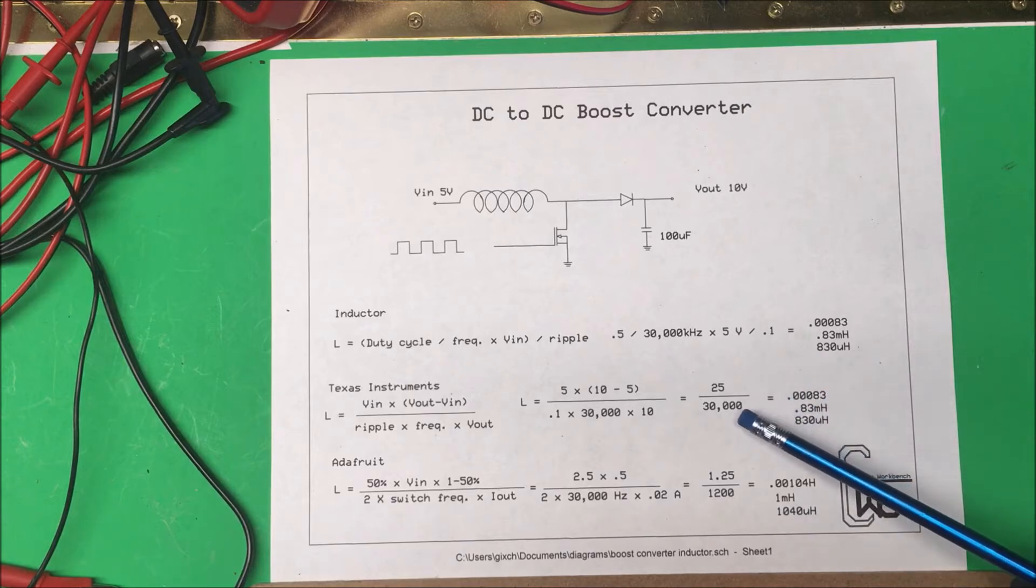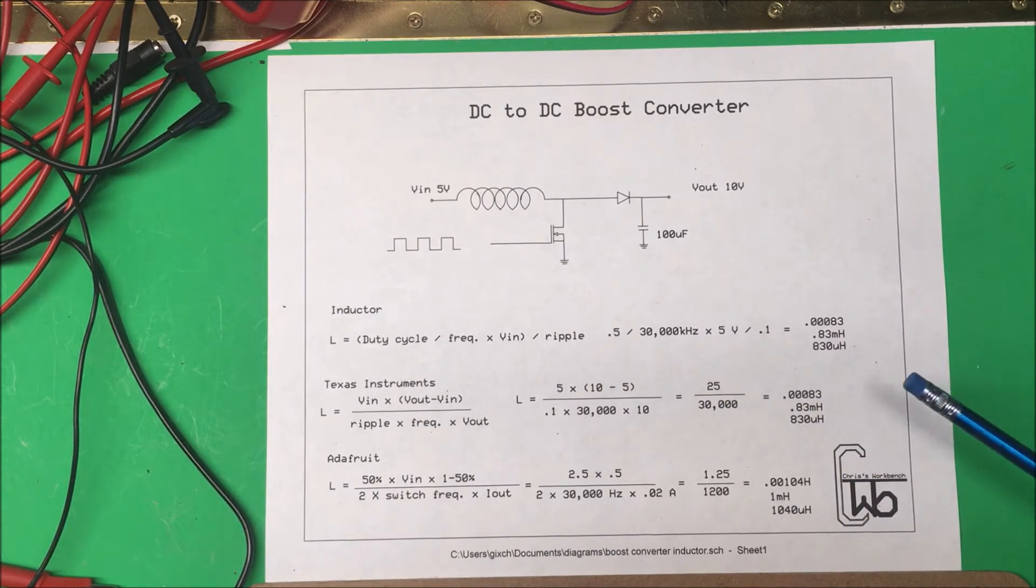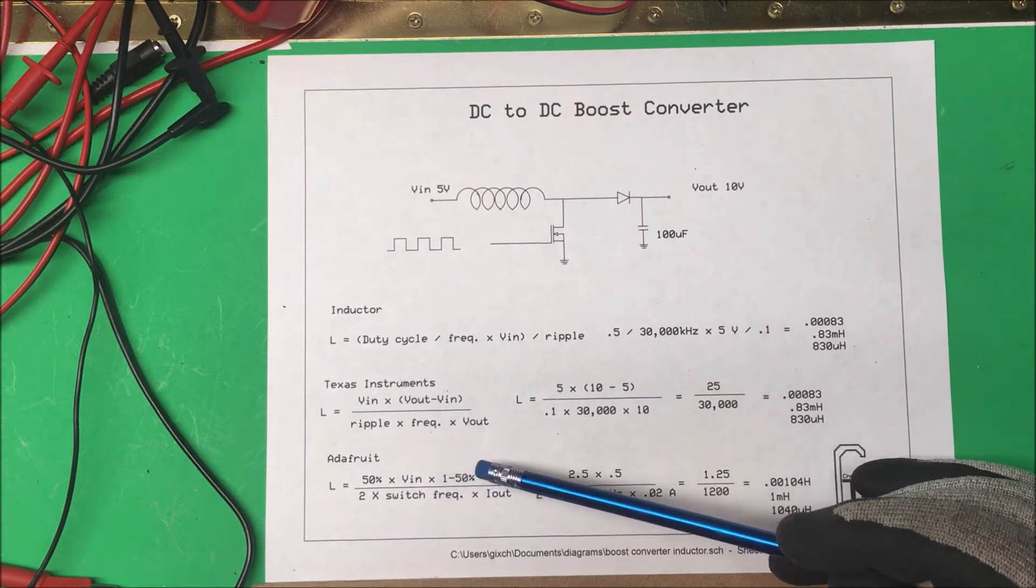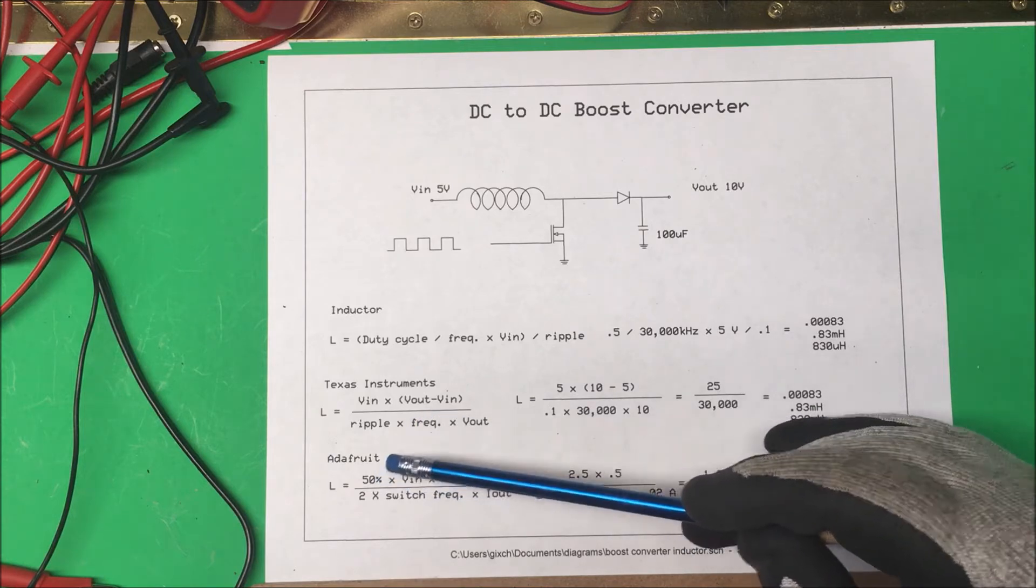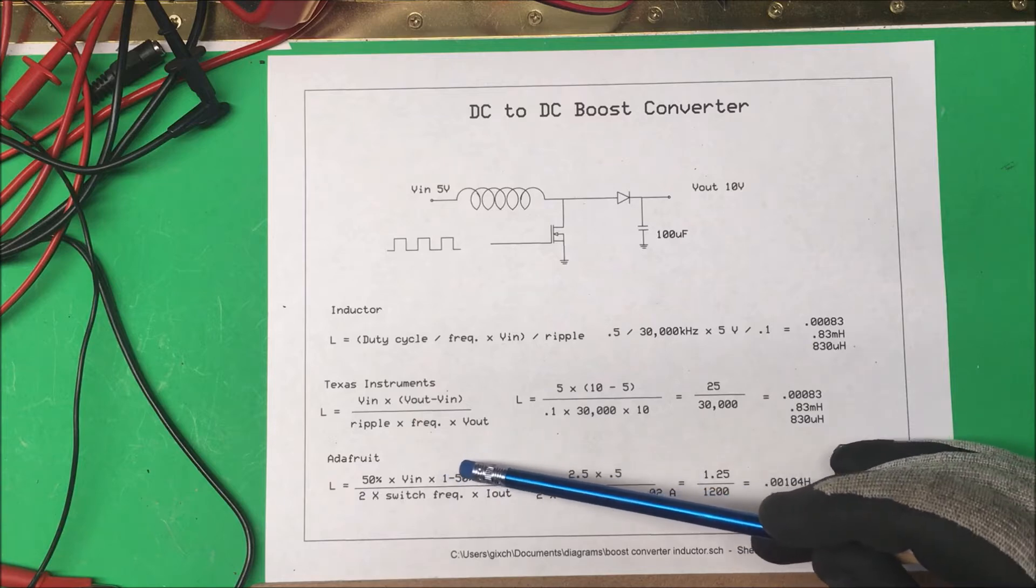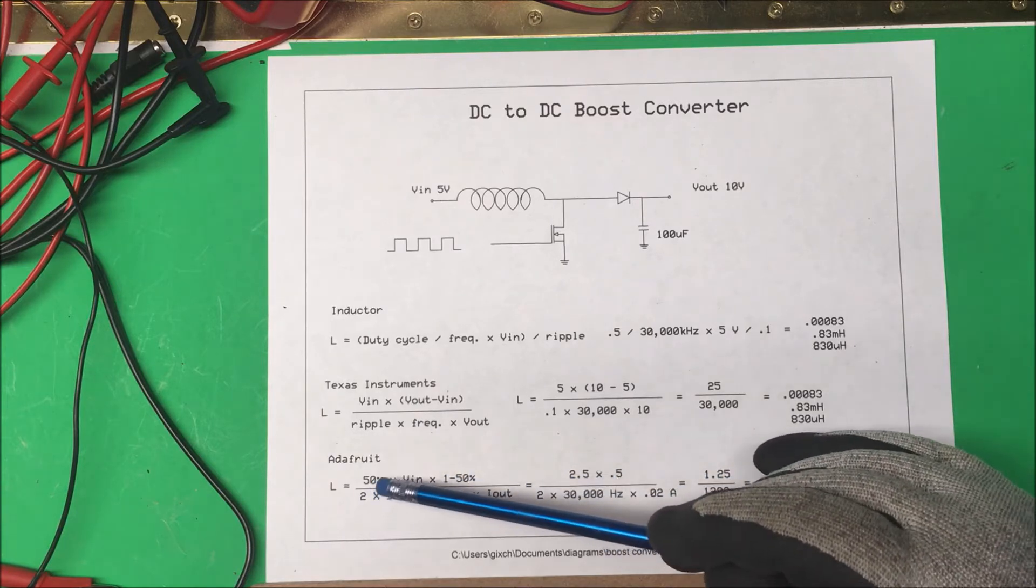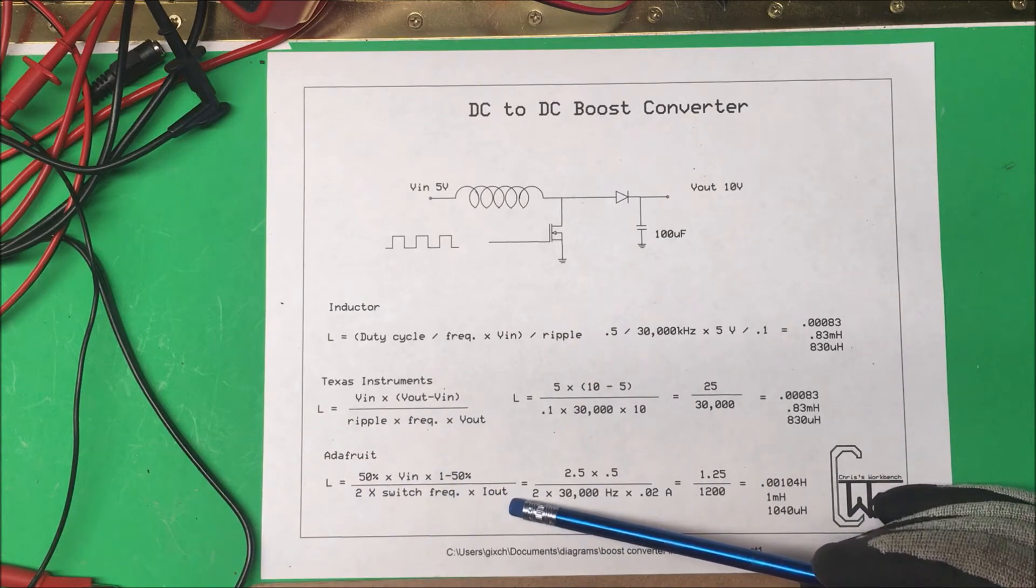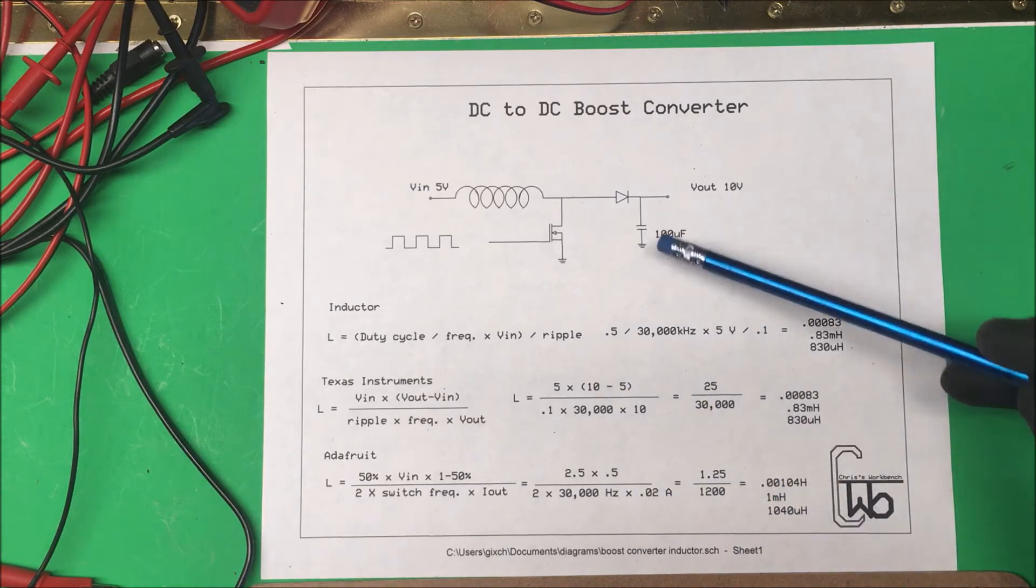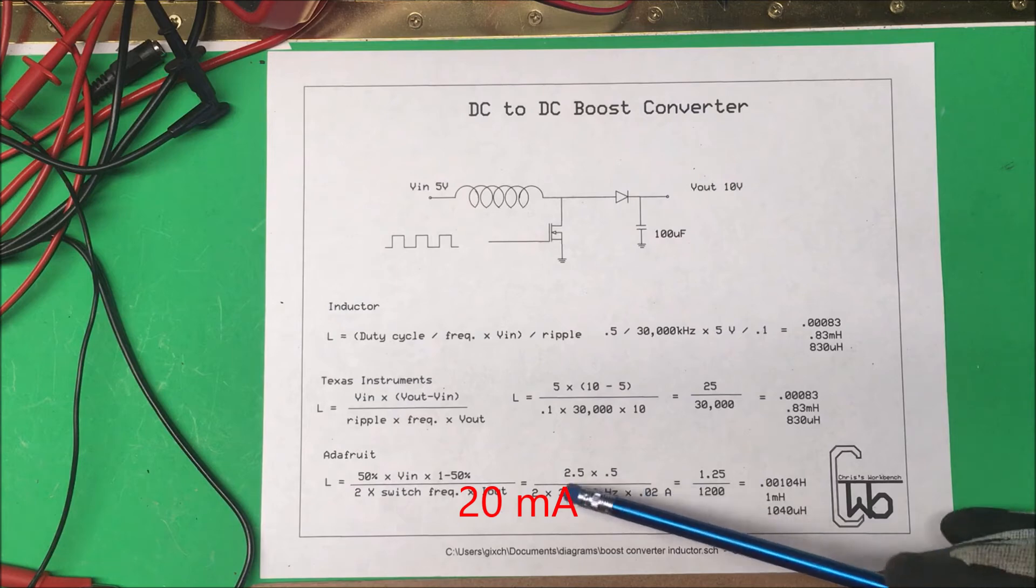Adafruit's formula uses your duty cycle, which is 50%, times V in times one minus your 50%, divided by two times the switching frequency. In this case we use the output current, so I'm going to have 200 milliamps coming out, so 0.02 here. If I divide this out it comes out to 1040 microhenries.